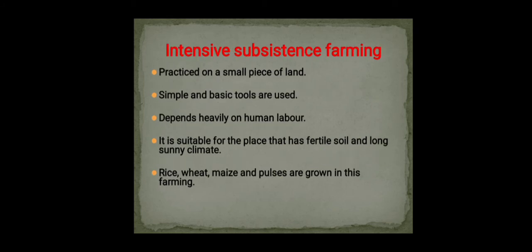Intensive subsistence farming is practiced mainly on a small piece of land using simple and basic tools. It heavily depends on human labor and is suitable for places with fertile soil and a long sunny climate. Examples of crops grown include rice, wheat, maize, and pulses. It is a labor-intensive technique.